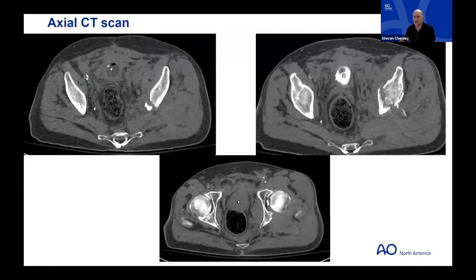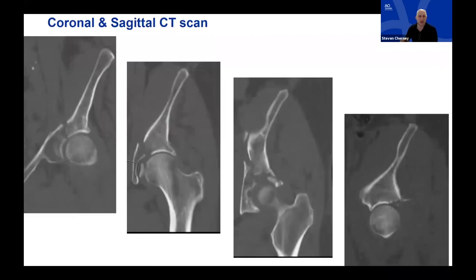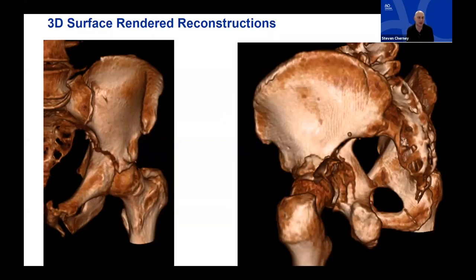Surface-rendered images are reviewed to visualize windows and clamp placement for the OR. There's concern about a high posterior exit point of the posterior column. John notes that any fracture with a high posterior exit point raises concern about the superior gluteal neurovascular bundle — sometimes with hematoma it's hard to trace on CT angiography. Cases have come through where the bundle couldn't be mobilized out of the fracture to achieve reduction.